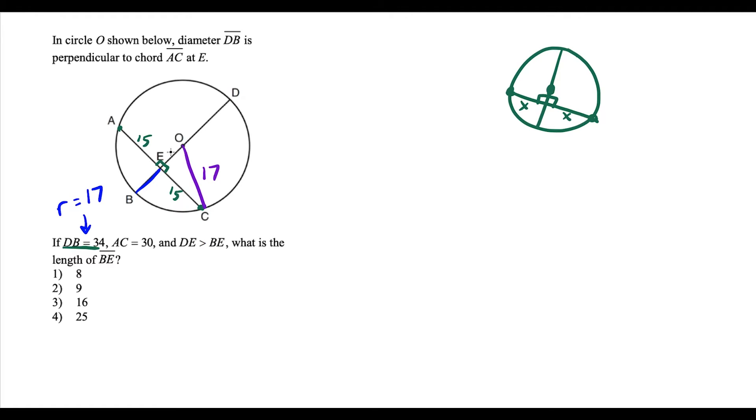But notice now we have a right triangle. So we're missing this side, OE. But we know this side is 15 and this is 17. So if you know your Pythagorean triples, it should jump out at you that OE is equal to eight units.